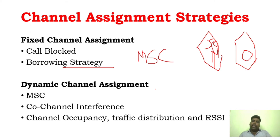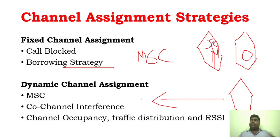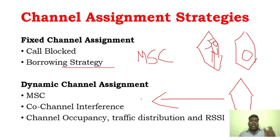The MSC will assign the channel — either a free channel or a frequency reuse channel. The MSC will make sure there is no co-channel interference when reusing a frequency. So, MSC will allocate channels either as a frequency reuse channel, or a channel which is free, ensuring there is no channel interference.